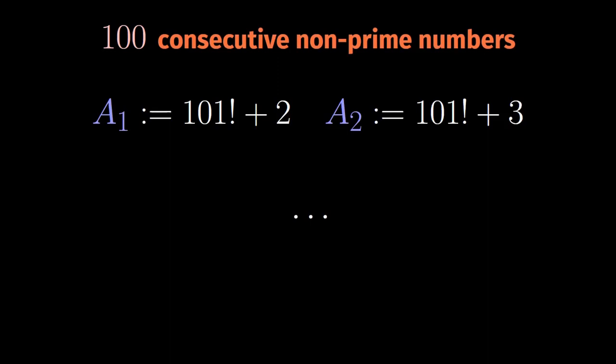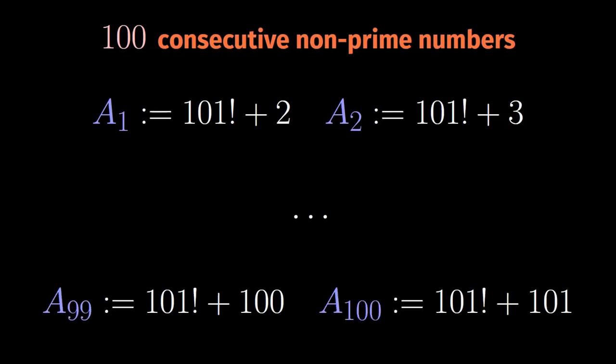We stop at a100. So we have exactly 100 numbers. If we can prove that none of them is prime, then we are done.